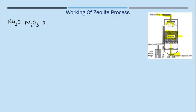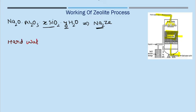Exhausted means it is not available for further softening of water. Zeolite, whose formula is Na2O·Al2O3·XSiO2·YH2O, can be represented as Na2Ze. Because this is the sodium ion which is mixed with hardness-producing salts. Hard water means a water in which calcium, magnesium, and those salts are available, and these cause hardness.